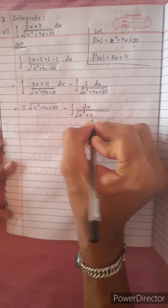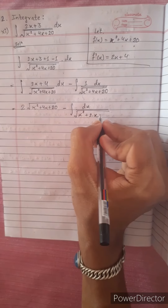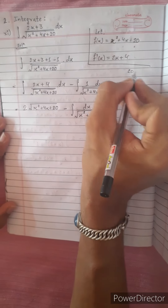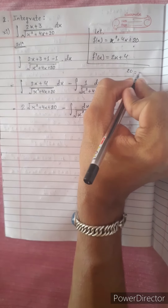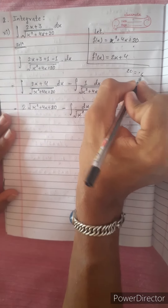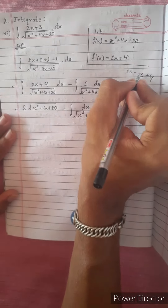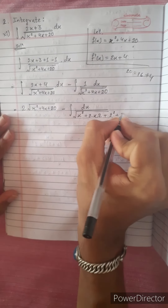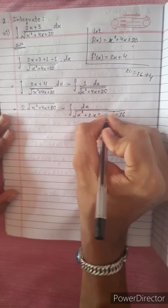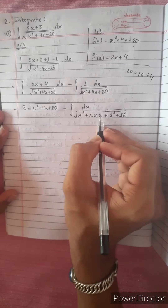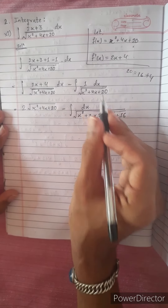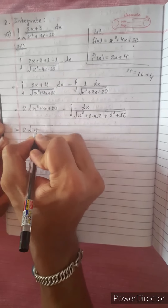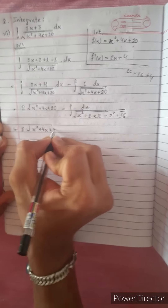Completing the square: x squared plus 4x, where half of 4 is 2, so we use 2 squared equals 4. Then 20 equals 16 plus 4. So x squared plus 4x plus 4 plus 16 equals (x plus 2) squared plus 16, which equals (x plus 2) squared plus 4 squared.